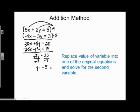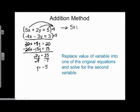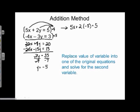Once you've found the first variable, the next steps are the same as in the comparison or substitution methods. I'll substitute the value of y into one of my original equations and solve for x. Going back to the first original equation — 5x plus 2y equals 5 — I replace y with negative 5. It's important to use the original equation here, not the multiplied versions, so that any errors made during multiplication don't carry through.